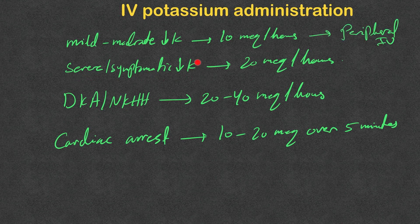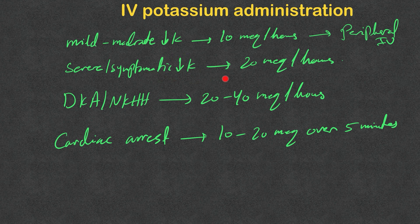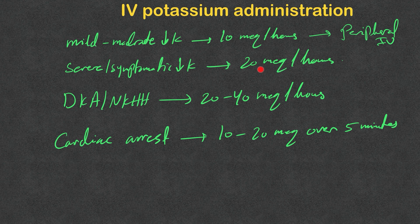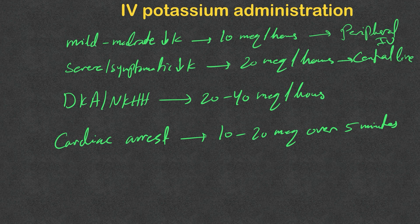If we're treating severe or symptomatic hypokalemia, we need to raise the potassium level quickly, so we can go up to 20 milliequivalents per hour. It's preferred for this rate, 20 milliequivalents per hour or above, to use a central line instead. If there is no central line, what you could do is split the 20 into 10 milliequivalents to be given in two peripheral IVs simultaneously.